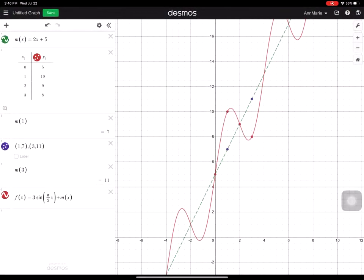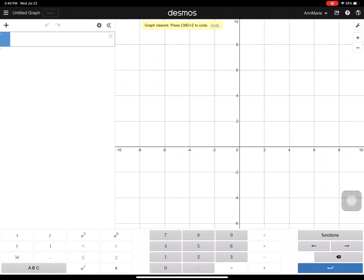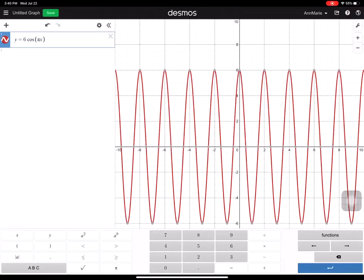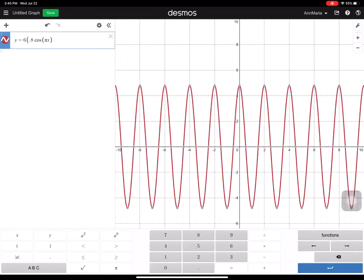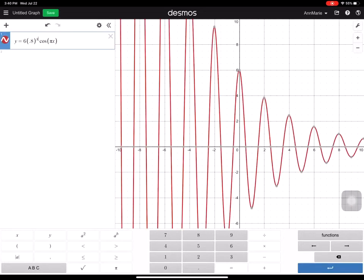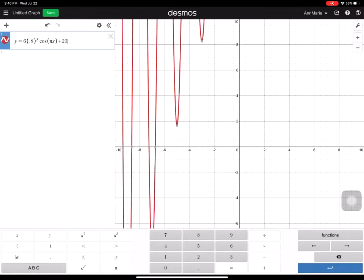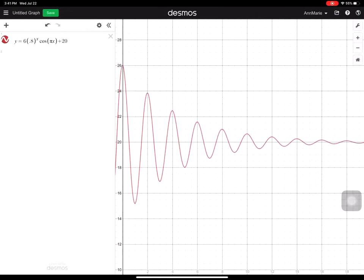And if we put that in decimals, y equals 6 times 0.8 to the x power times the cosine of pi x plus 20. And we can see that my spring starts up here at 26 and then it oscillates until it slowly levels up.